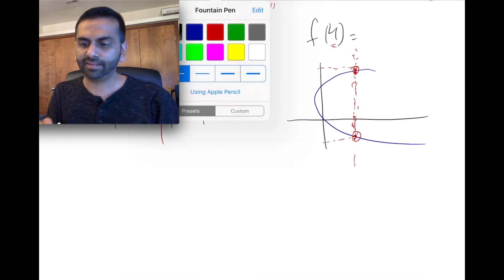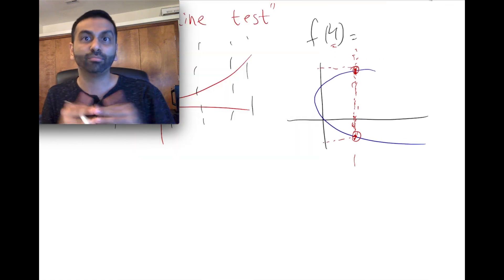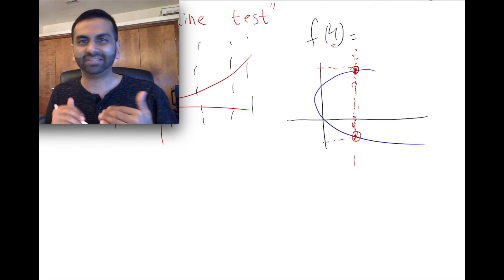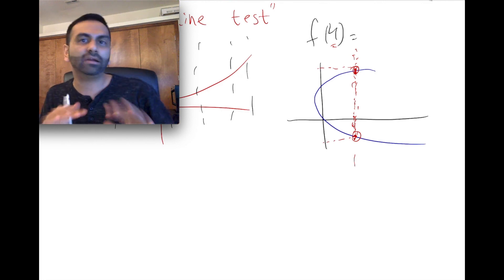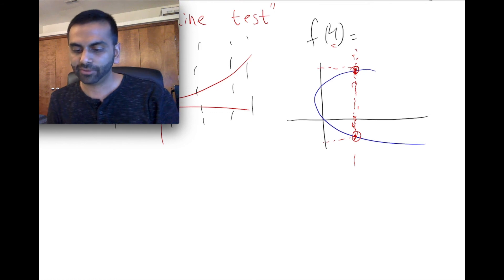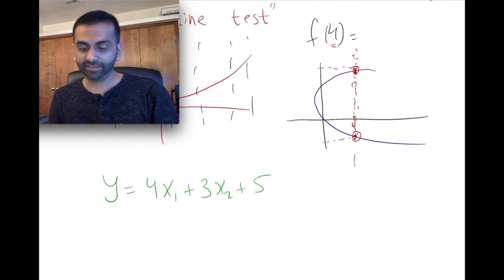All right, so there's that. Last thing here for today is what if there's multiple variables? What if you have like three different x variables and one y variable? So if you were to have an equation like, y equals 4x1 plus 3x2 plus 5 or something, this is basically saying that y is a function of x1 and x2, right?